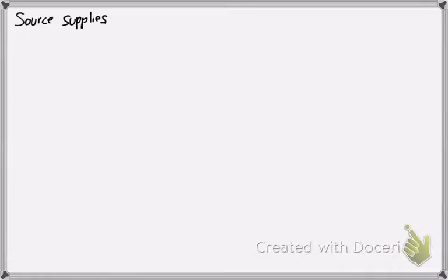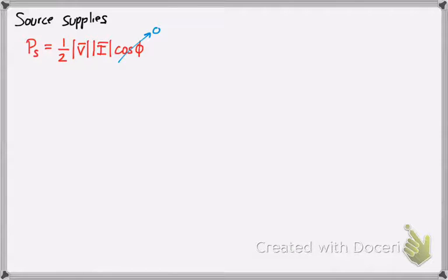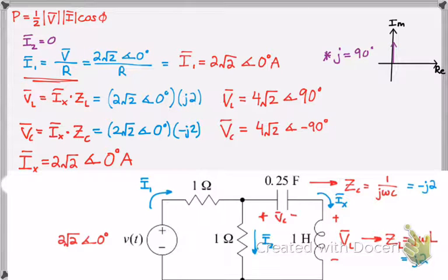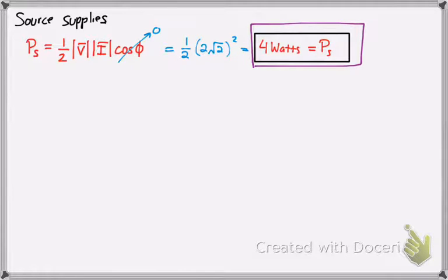Now we know the source supplies power given by this formula. The source is that battery, the time-varying voltage. We know cosine phi is 0 degrees, so we put in the magnitudes of the voltage and the current. Notice the magnitude is simply the number in front of the angle sign. Since phi is 0, cosine of 0 equals 1, so we get 4 watts as the power supplied.